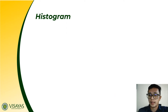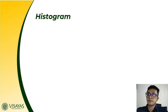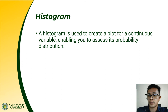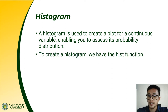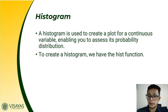That covers the basic plot, created using the plot function. Aside from basic plots, you can also create a histogram. A histogram is used to plot a continuous variable, enabling you to assess its probability distribution. If the data follows a normal distribution, the histogram should look like a bell curve. To create a histogram, we use the hist function.